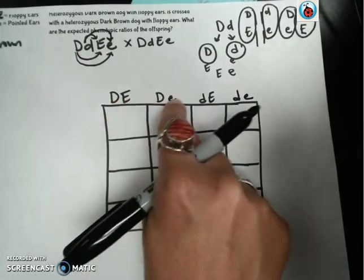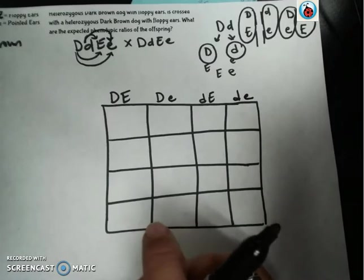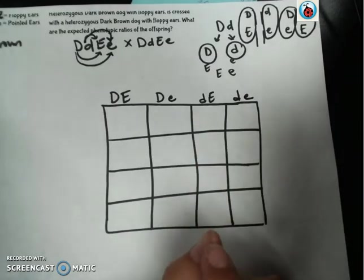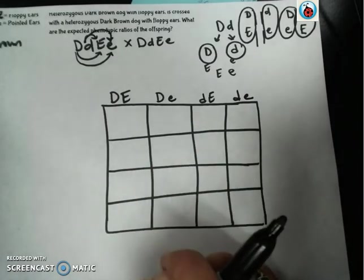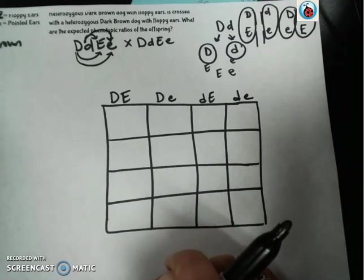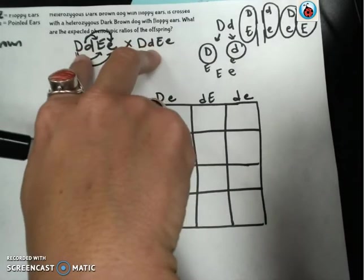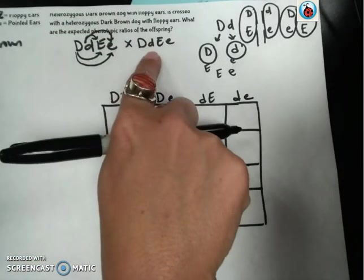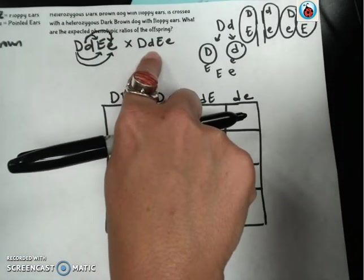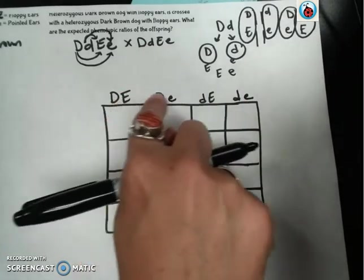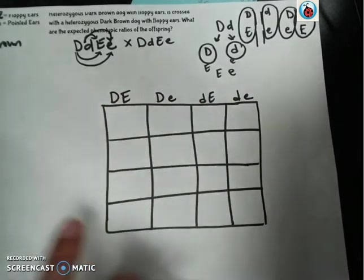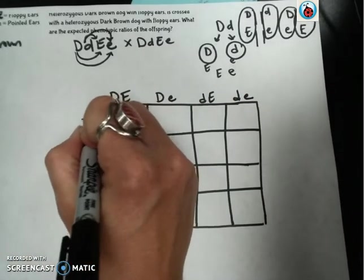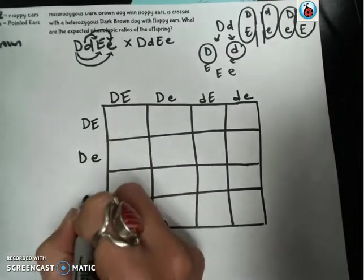So these represent the different combinations in the gametes produced by meiosis of these two traits, all depending on Mendel's Law of Independent Assortment. Now, because both of our parent dogs have the same genotype, this dog's gametes and their possibilities are the same. So we're just going to take these and copy them down the side because this is the other dog's gametes.